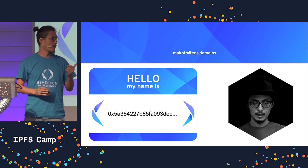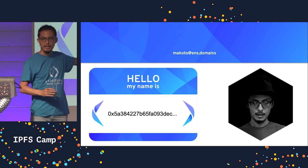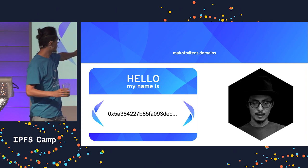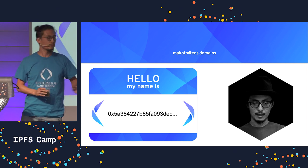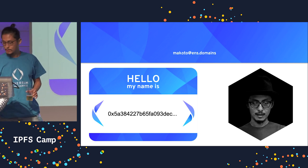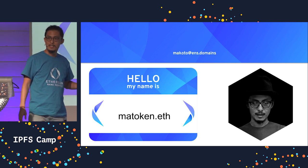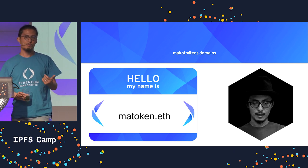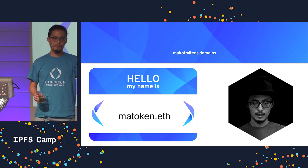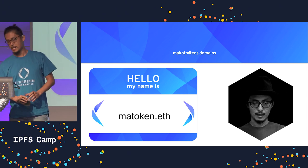So in Ethereum, we have a global Ethereum address where you can send funds. That's the address, but it doesn't have a full name. What we do at ENS is you can basically assign a name like matoken.eth, so that now if you go to any crypto wallet and type matoken.eth, it resolves to the same address. That's the gist of what ENS is.